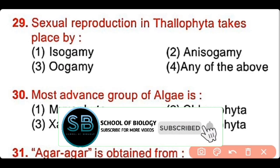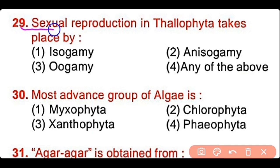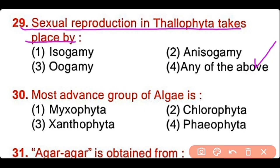Question number 29: Sexual reproduction in thallophytes takes place by means of isogamy, anisogamy, oogamy, or any of the above? The correct answer is option 4. Sexual reproduction in thallophytes can be accomplished by means of isogamy, anisogamy, or oogamy.